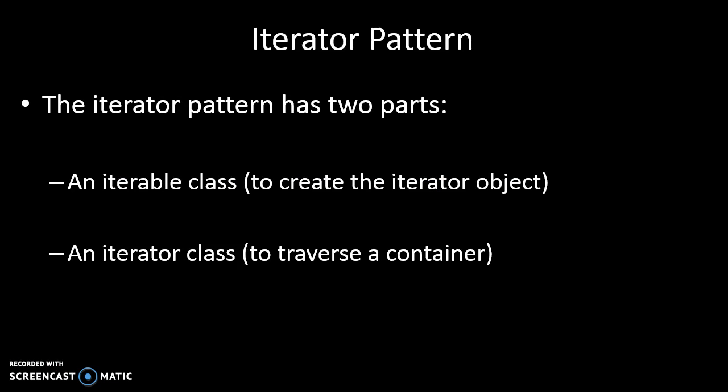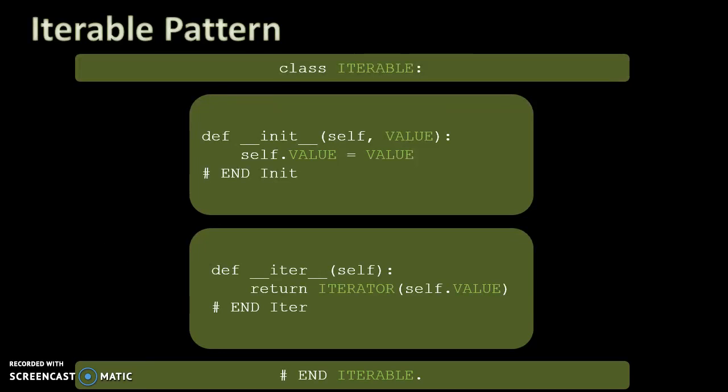To implement that, the iterator pattern has two separate classes. One is the iterable class, which converts the container into an iterable object. The second is the iterator class itself, which allows you to visit each element on the list. We'll look at the pattern — and again, this is a template for code, not the code itself.